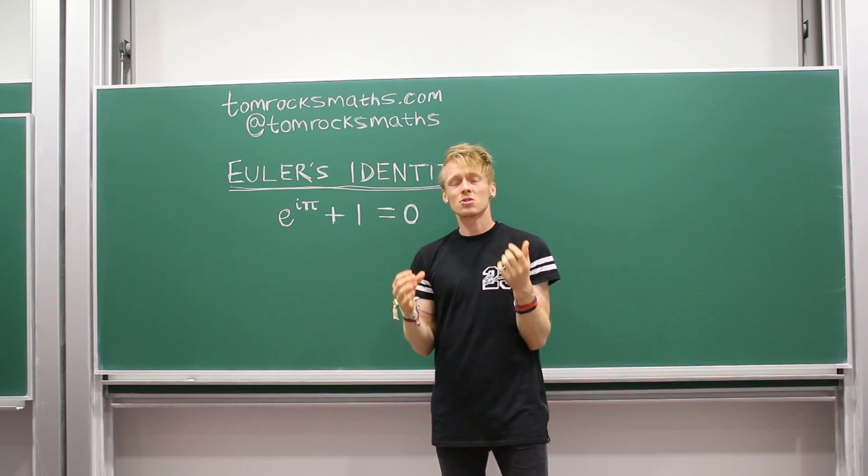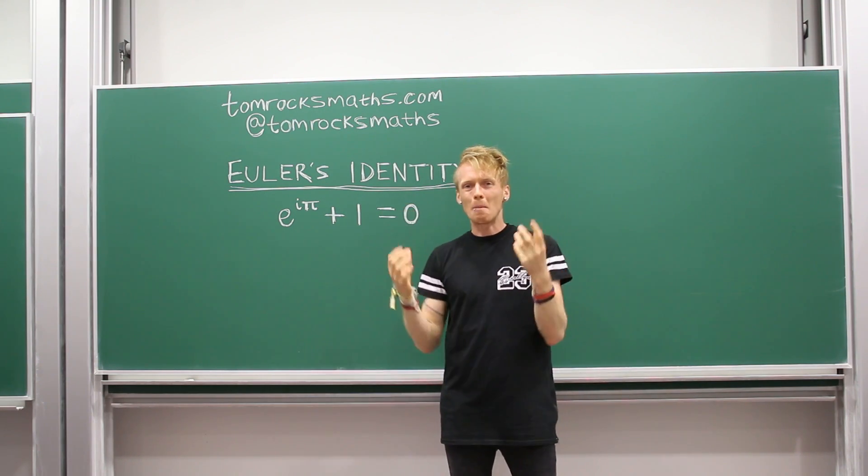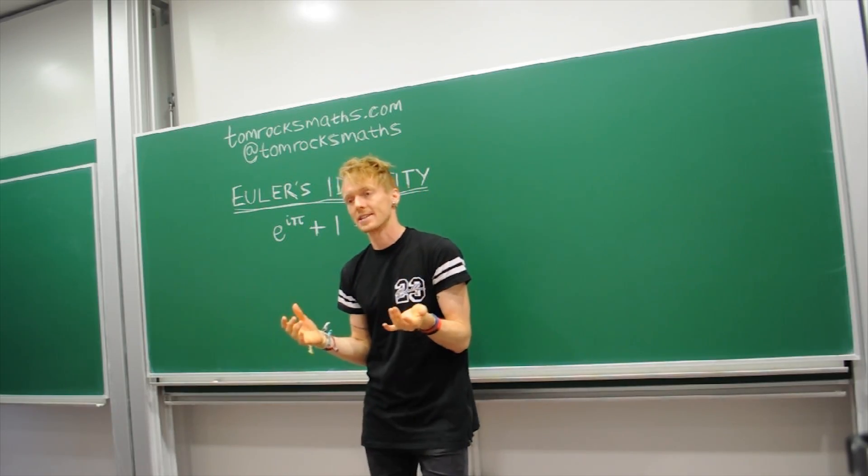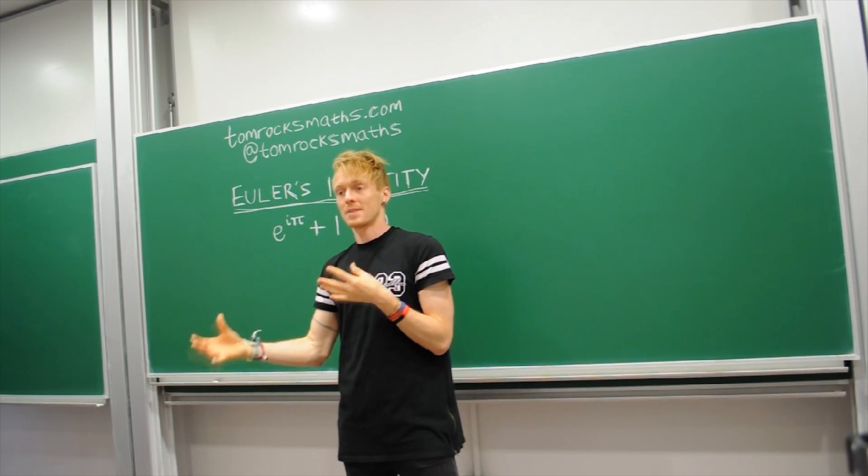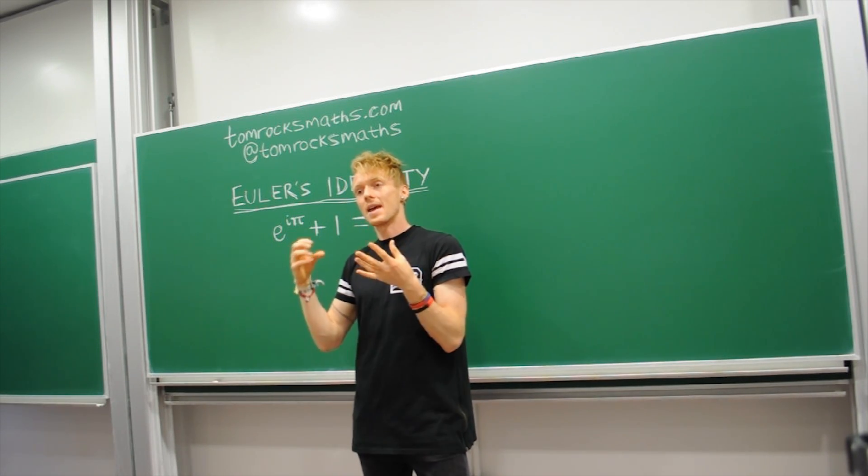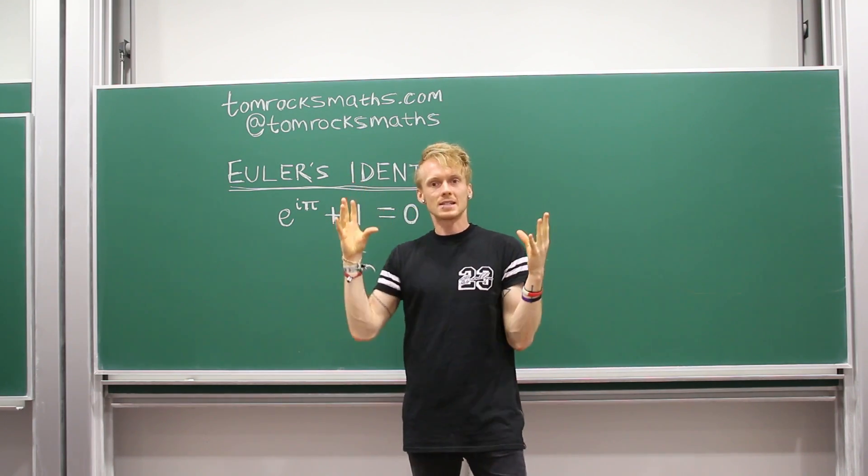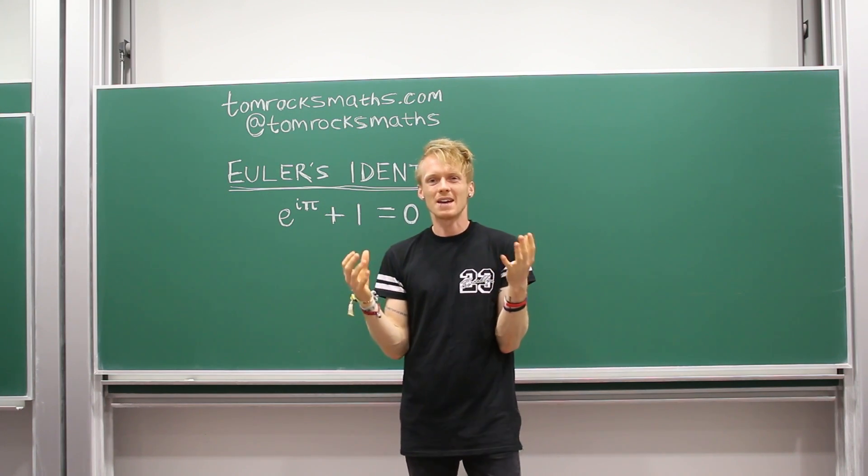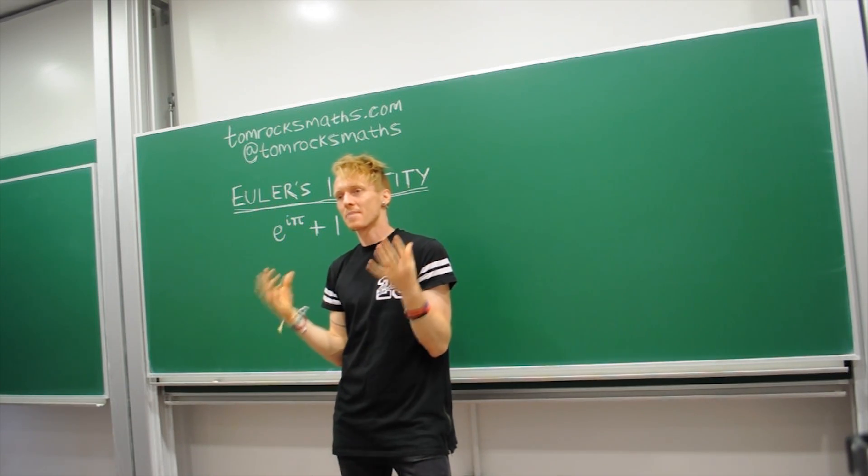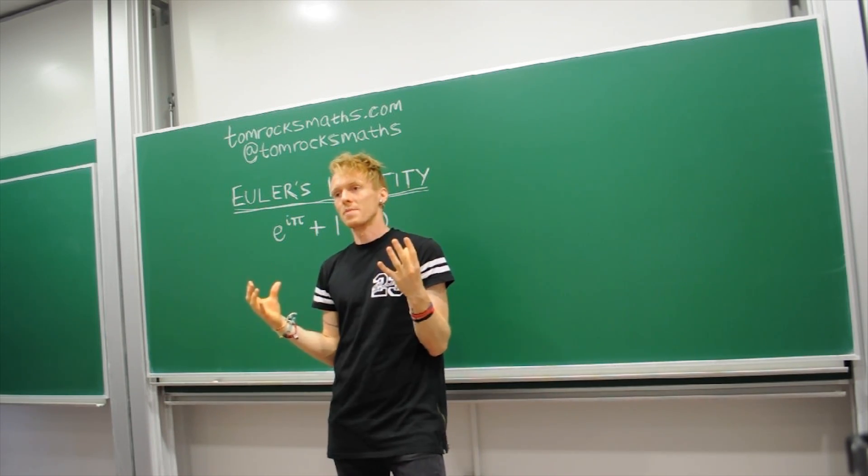The reason this equation is deemed so beautiful is the fact that it's so short and so simple and yet it captures some of the most complex behavior in the whole of maths. A study was actually done a few years ago by neuroscientists who took a group of mathematicians and put them inside an fMRI scanner which showed activity in their brain, and they showed them maths equations and actually found that the same part of your brain that buzzes and lights up when you see a great work of art or hear a beautiful piece of music, that same part will actually light up when you see a beautiful mathematical equation. And this equation, Euler's identity, was actually deemed to be the most beautiful of all maths equations.